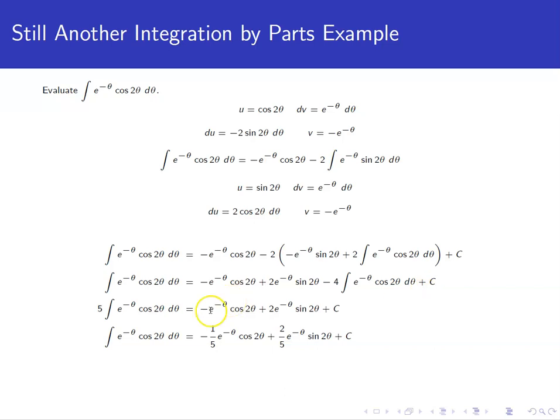All right, so now we want to solve for the integral to get back to what we were starting with to try to figure out what the answer is. So divide both sides by 5 gives us a final answer of negative 1 fifth e to the negative theta cosine 2 theta plus 2 fifths e to the negative theta sine 2 theta. And then when we take the constant divided by 5, that's still an arbitrary constant, so I can leave it as just plus c.